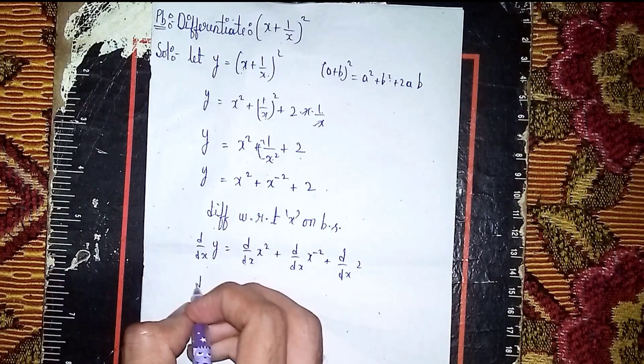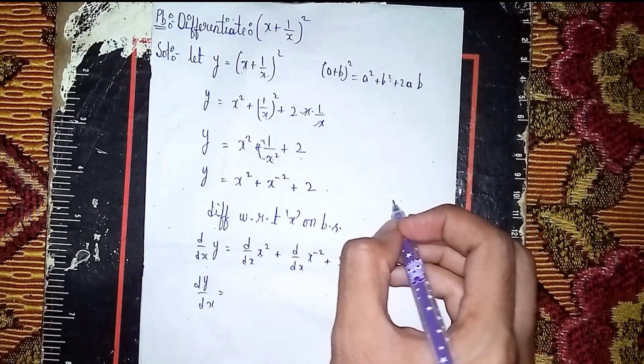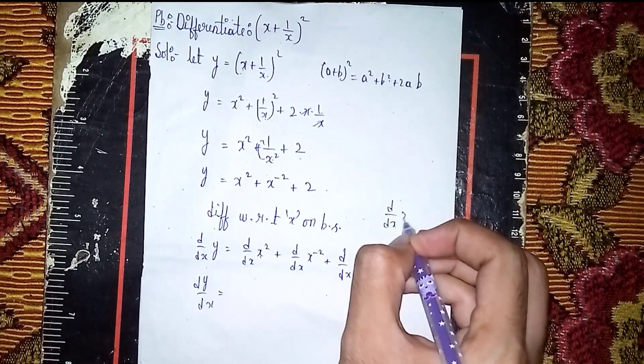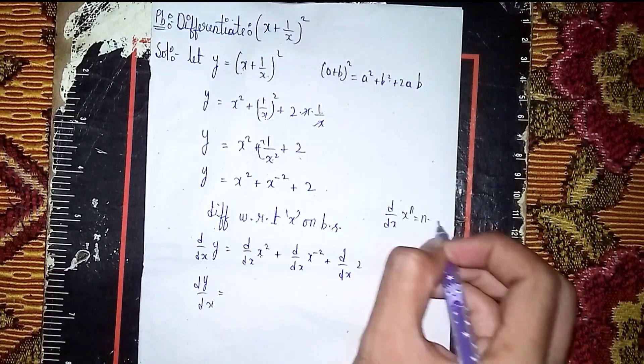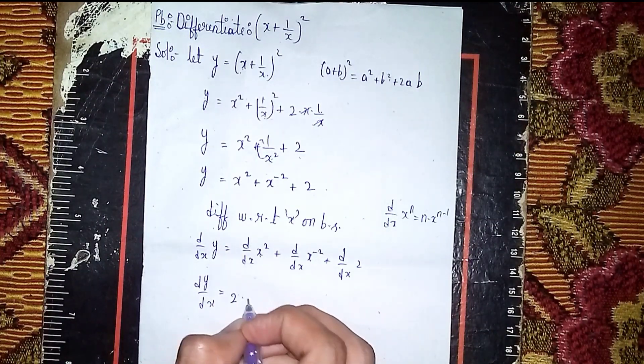So here dy/dx equals, now use the exponent formula. d/dx of x^n equals n times x^(n-1). So it becomes 2 times x^(2-1).